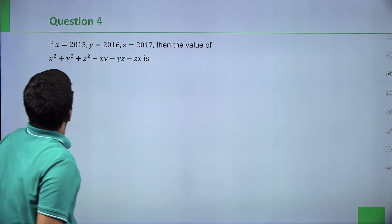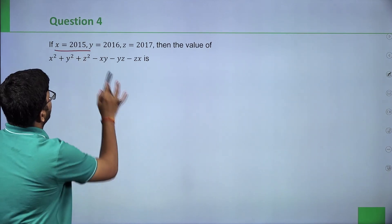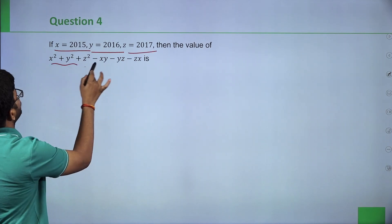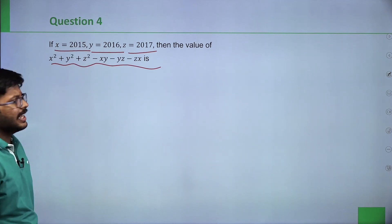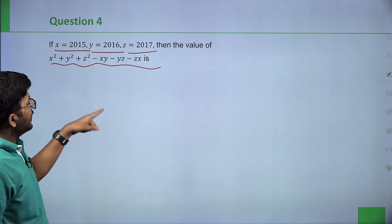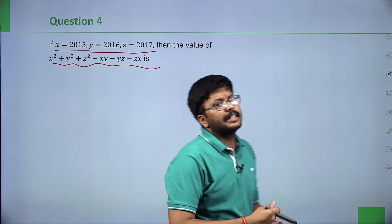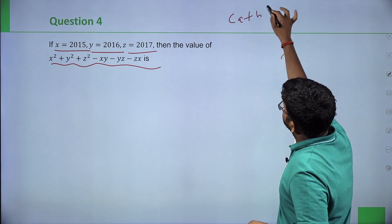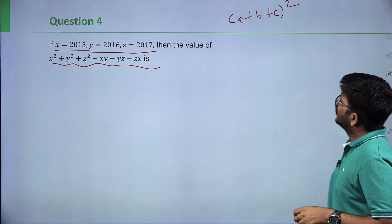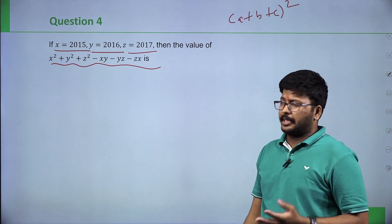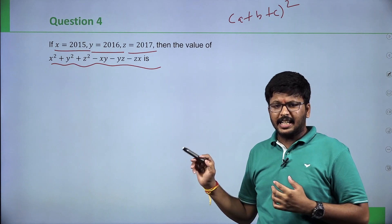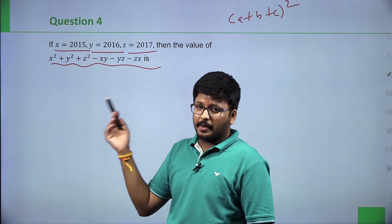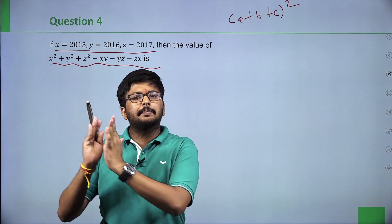Next question: if x equals 2015, y equals 2016, z equals 2017, find the value of x square plus y square plus z square minus xy minus yz minus xz. When we see this expression, it connects to the formula for a plus b plus c the whole square: a square plus b square plus c square plus 2ab plus 2bc plus 2ca.